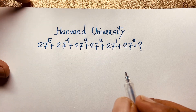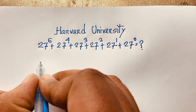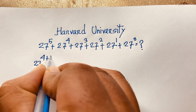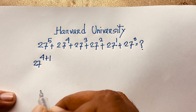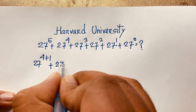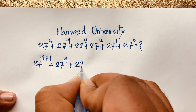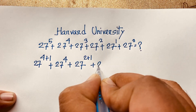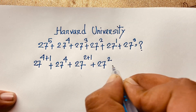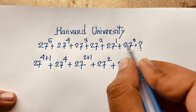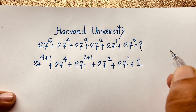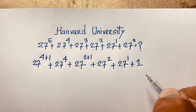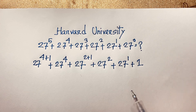For the solution, first I can see here is 27 power 5, so it will be 27 power 4 plus 1 — you know that 4 plus 1 is 5. Then 27 power 4, and here power 3 so it will be 2 plus 1. Then 27 power 2, 27 power 1, and 27 power 0 equals 1. You know that a to the power 0 is 1, so by the exponential law, 27 power 0 is 1.